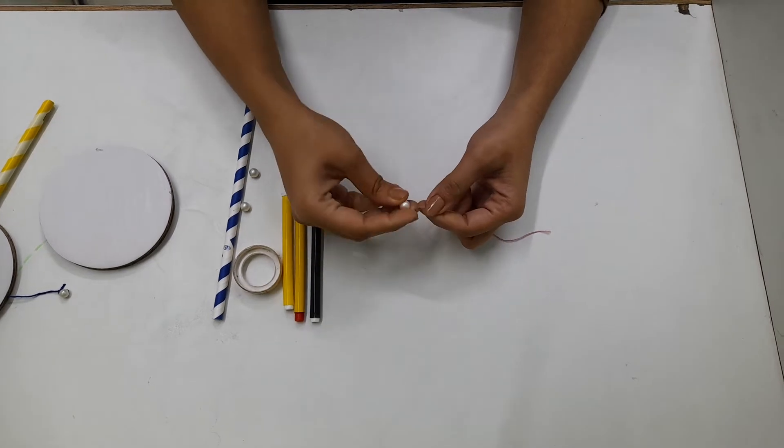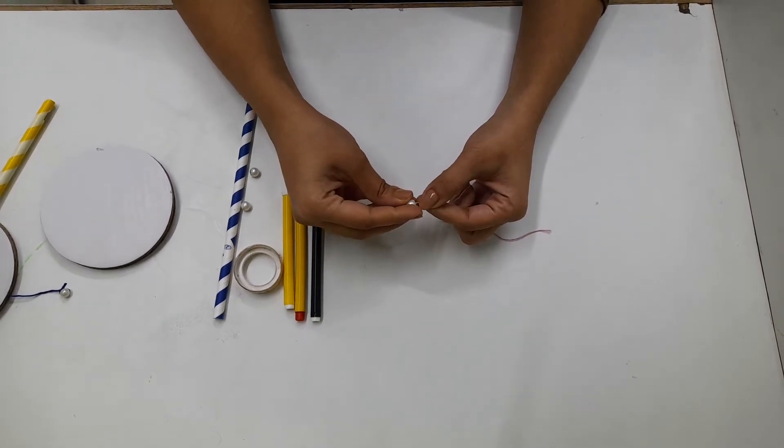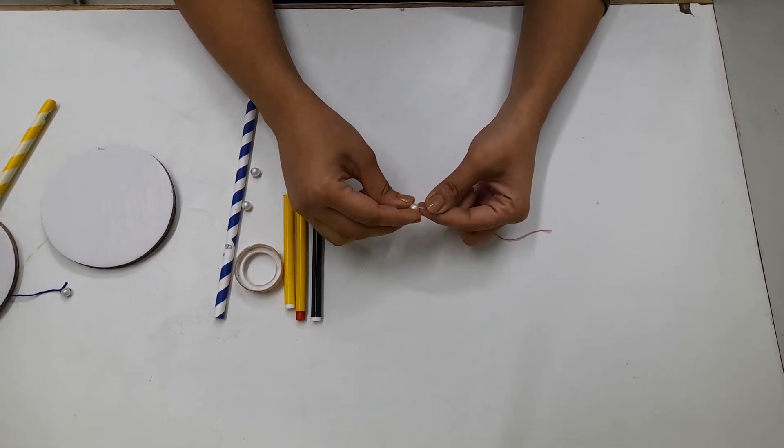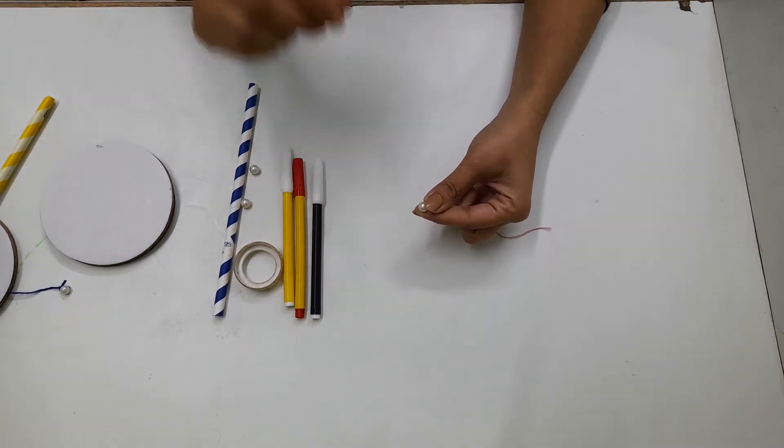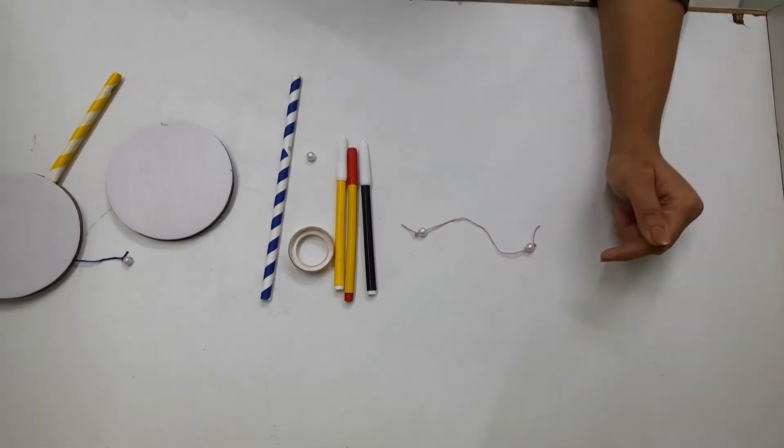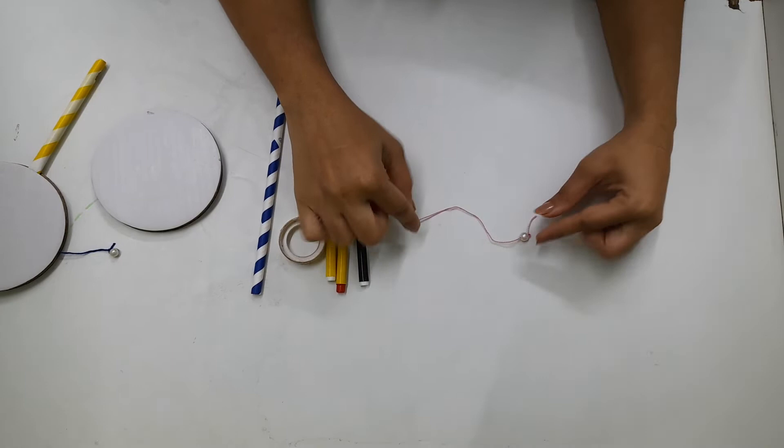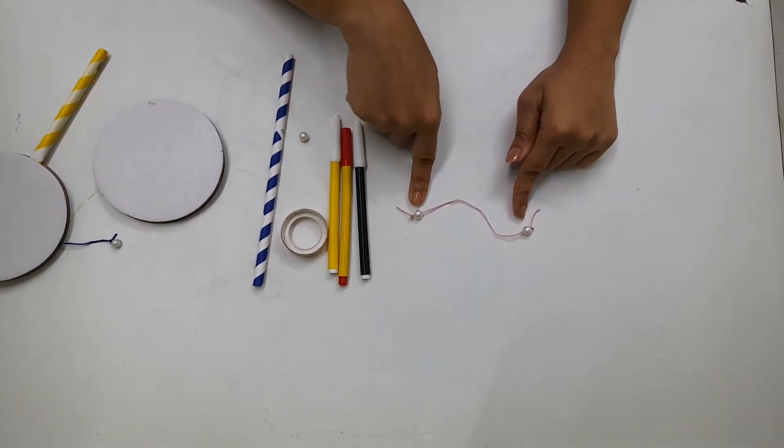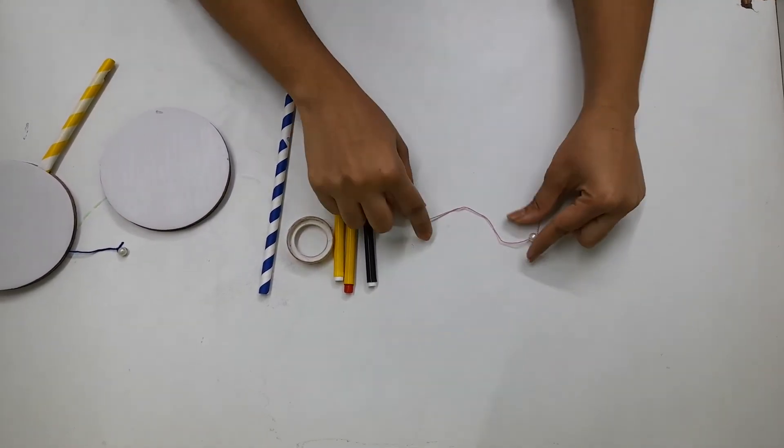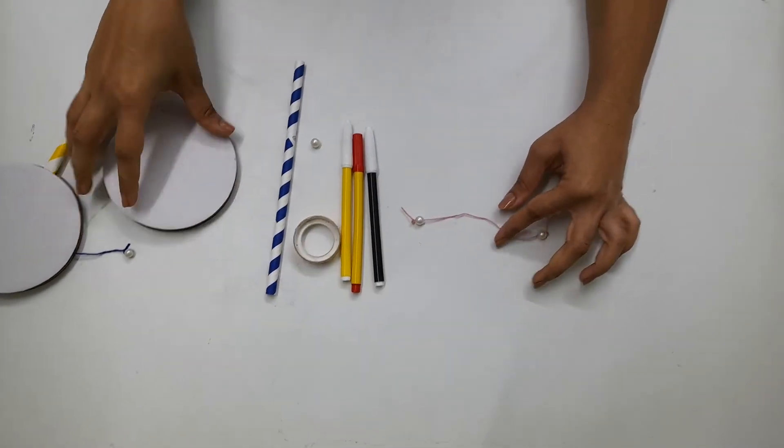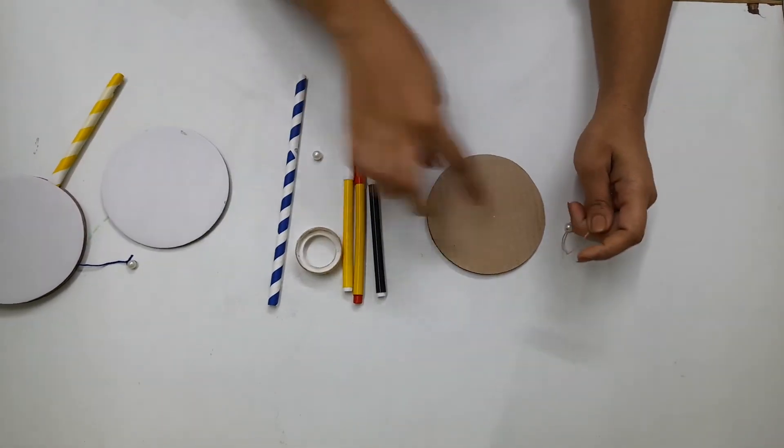Then tie a knot like this. So I've inserted beads on both the sides of the thread, and then tie a knot from both the sides so that it couldn't come out.